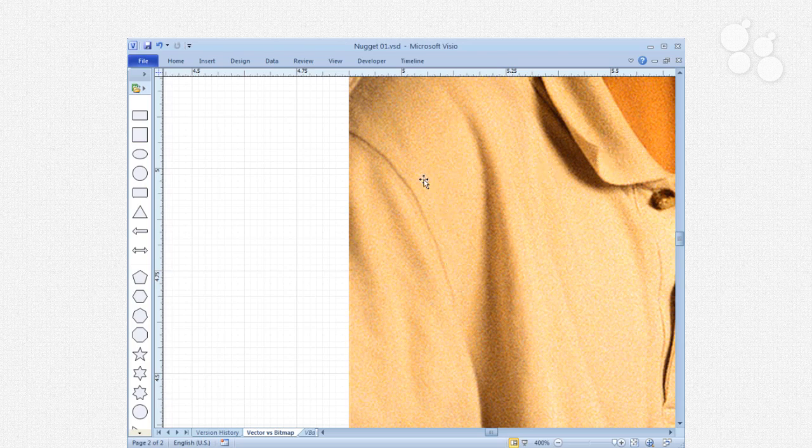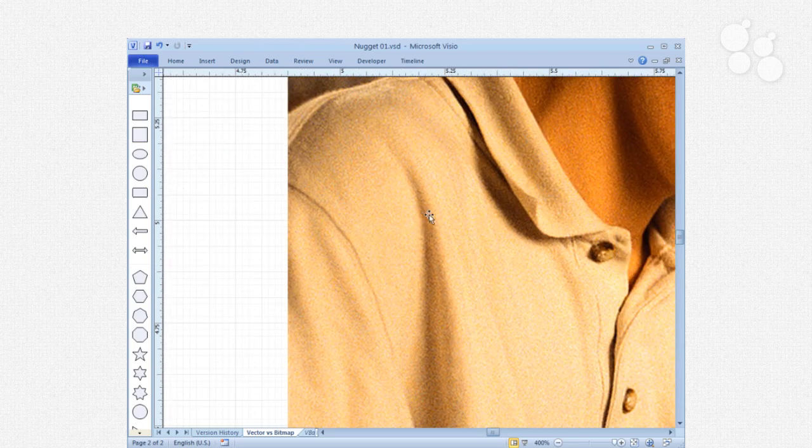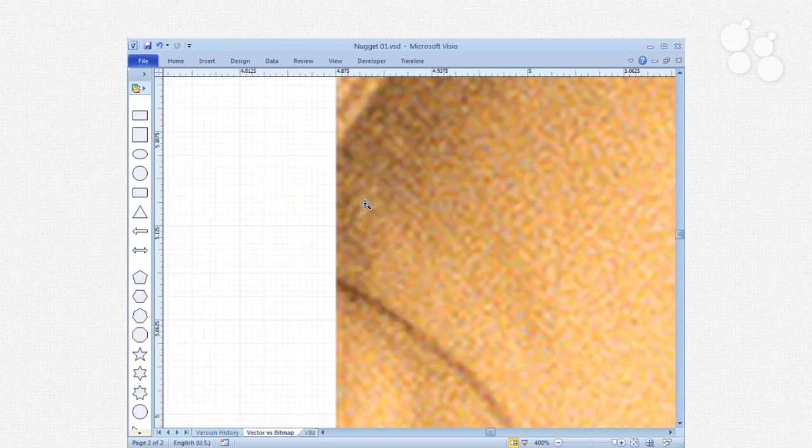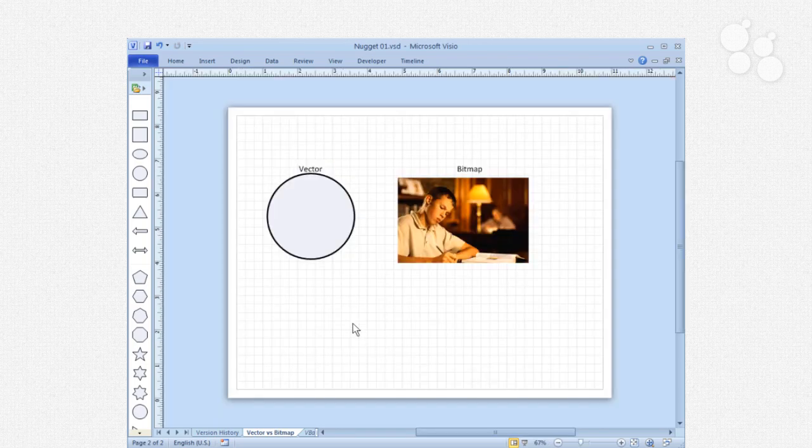If we come in even closer yet, it just looks terrible. So my point is, Visio, we want to use vectors as much as humanly possible.